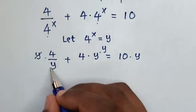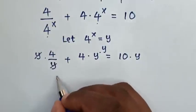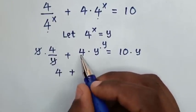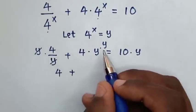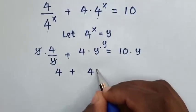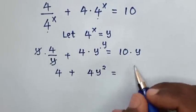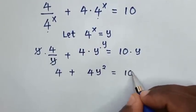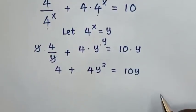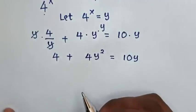To remove this fraction, we multiply by y on both sides. So y cancels, giving us 4 plus 4y squared equals 10y. Then we take 10y to the left side.